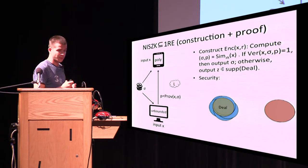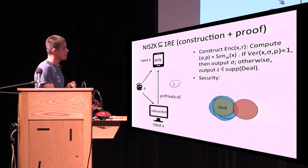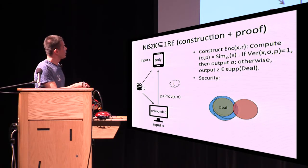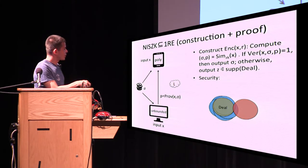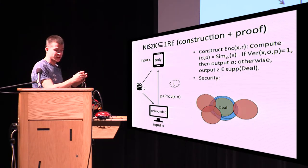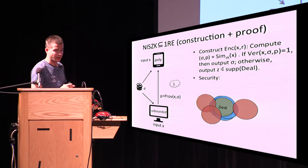Now consider the distribution of a zero-input. I claim the distribution of the zero-input should be far apart from the dealer, or touch it only a little bit. Every string output by the encoding for a zero-input that touches the dealer's distribution contributes to the soundness error — whenever you output a string in the dealer's support, it has been verified correctly and produced by the simulator. So any intersection between the red bubble and the green bubble contributes to soundness error, meaning the red bubble must be far from the green bubble. The picture: blue bubbles close to the dealer distribution, red bubbles far from it — this is one-sided randomized coding.